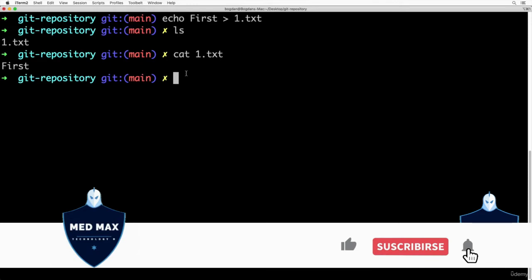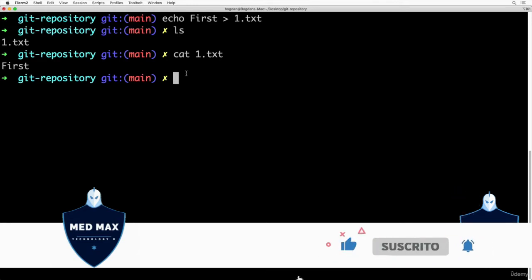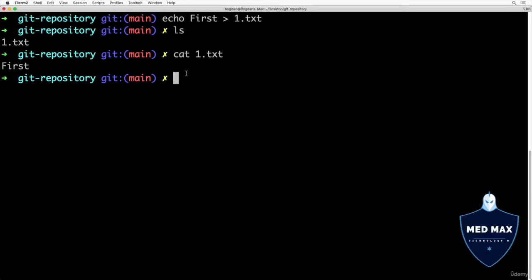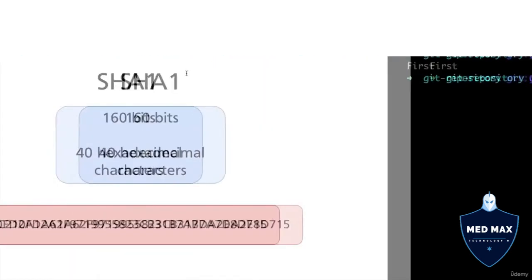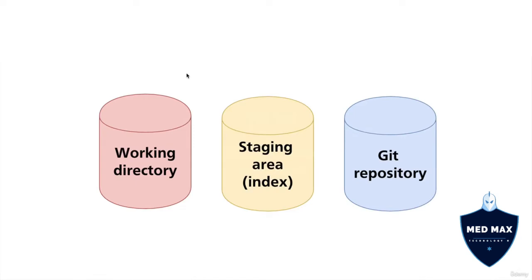Now it's time to explain the difference between the working directory and the git repository. There is also a staging area. In git, there are three areas where files and folders can be located: the working directory, the staging area (or index), and the git repository.